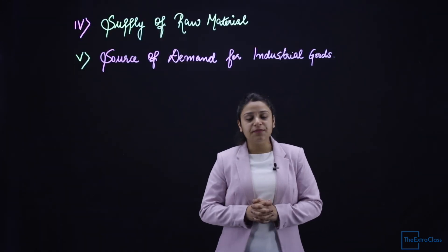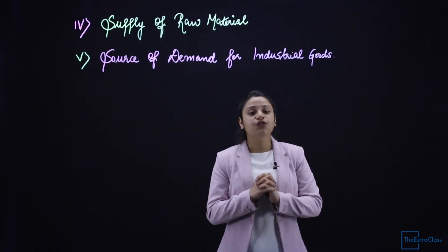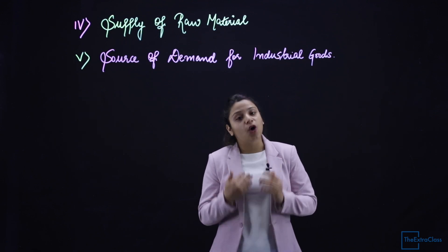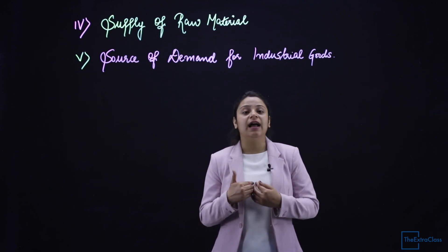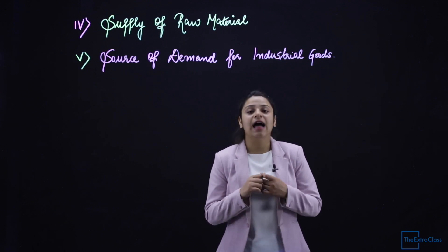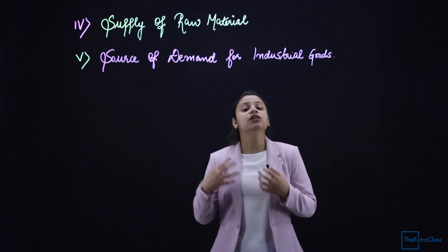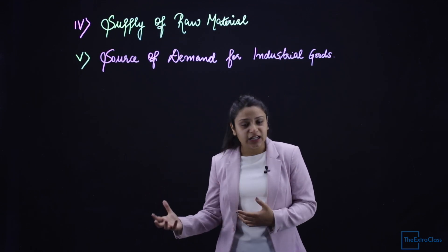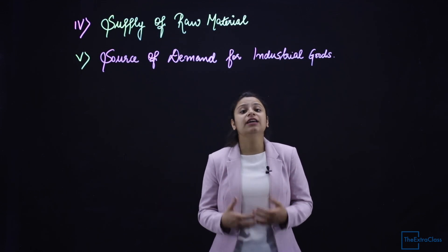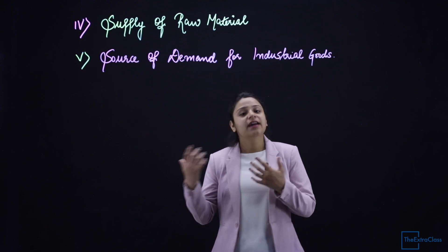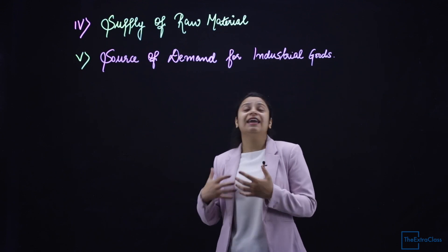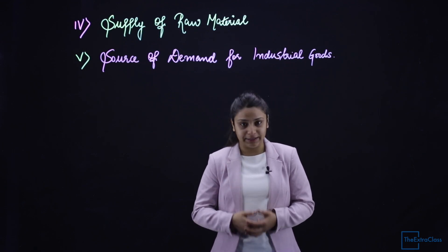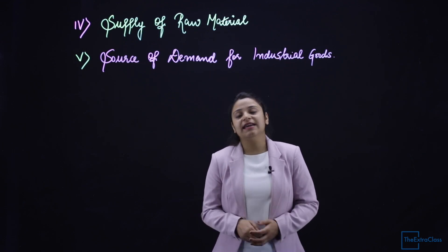The next point about the importance of agriculture is supply of raw material. Raw material comes from agriculture. For instance, cotton for cotton textiles and sugar cane for sugar mills both come from agriculture. Agriculture is essentially a backbone because it provides the raw material for industry.